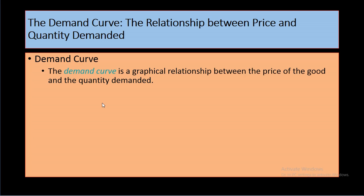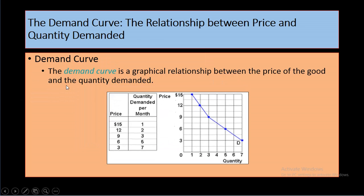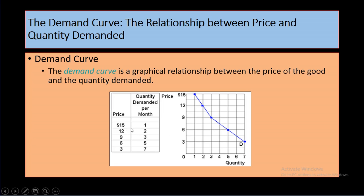Then what is a demand curve? When we plot this table relationship into graphical form, it is called a demand curve. On the horizontal axis we have quantity, and on the vertical axis we have price. When price was 15, quantity demanded was 1; when price was 9, demand was 3. There is always a downward sloping demand curve — always a negative, inverse relationship — and that is why the demand curve always moves downward.